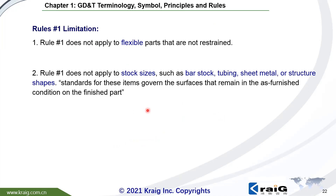Rule No. 1 has some limitations. It does not apply to flexible parts such as rubber, soft parts, or plastic. And Rule No. 1 does not apply to stock sizes such as bar stock, tubing, sheet metal, or structural shapes, because those materials are governed by industrial standards and all tolerances remain in the as-furnished condition.